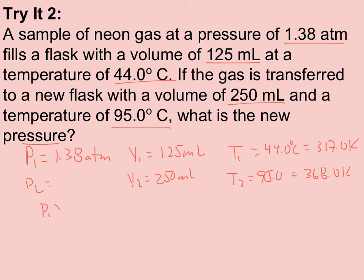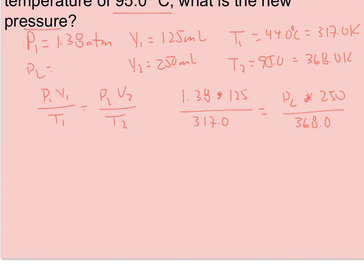And since all three variables are involved, I'm going to have to use P1 times V1 over T1 equals P2 times V2 over T2. So if I plug and chug here, I'm going to have 1.38 times 125 over 317 is equal to P2 times 250 over the 368. And as I scroll up here to make some room, that means I'm going to have 1.38 times 125 times 368 equal to 317 times P2 times 250.